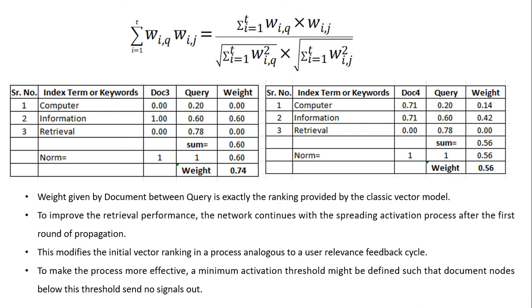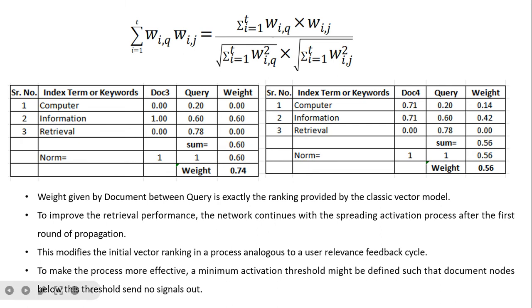After the first level, there is a back arrow from the document to document term nodes and a continuous interaction, with the weight reducing at each interaction until it reaches a particular threshold. By that way, most documents get connected and the source is built even if a particular keyword is not present. The weight given by the document-query interaction is exactly the ranking provided by the classical vector model. To improve retrieval performance, the network continues with a spreading activation process after the first round of propagation, modifying the initial vector ranking analogously to a user relevance feedback cycle. A minimum activation threshold may be defined so that document nodes below the threshold send no signals, preventing irrelevant documents from appearing.